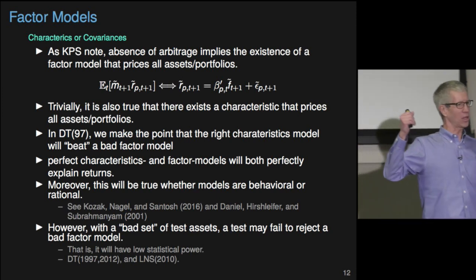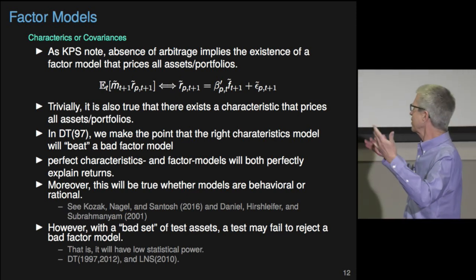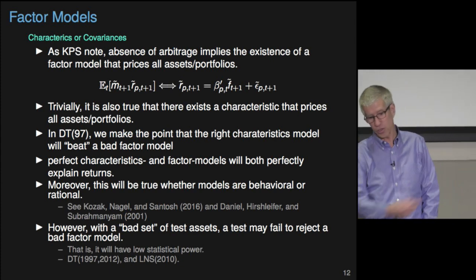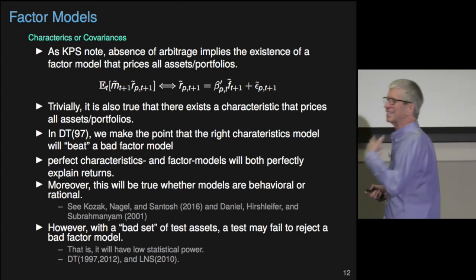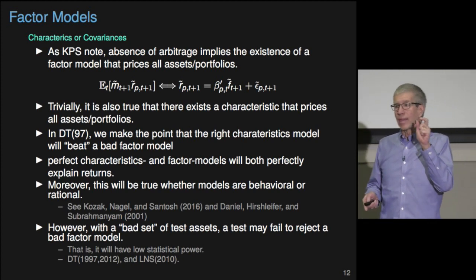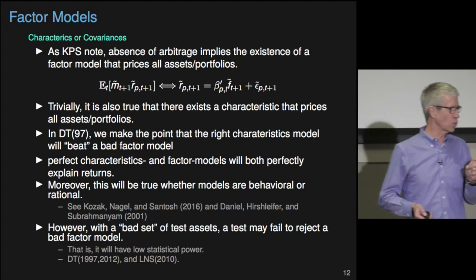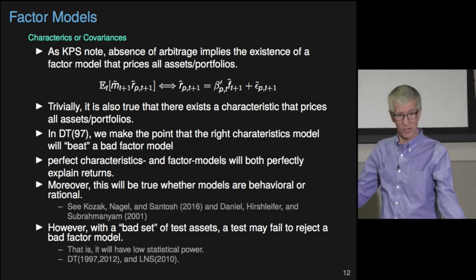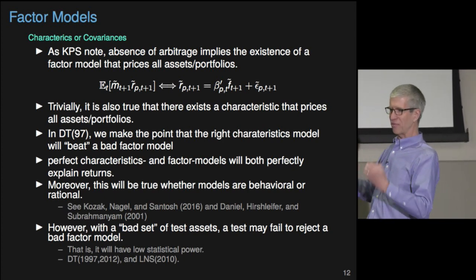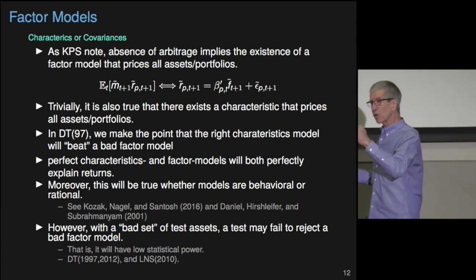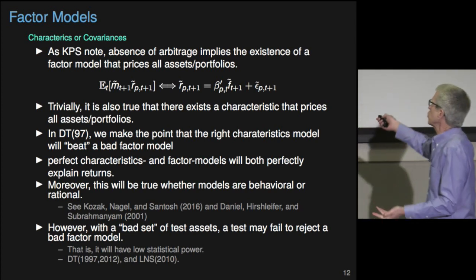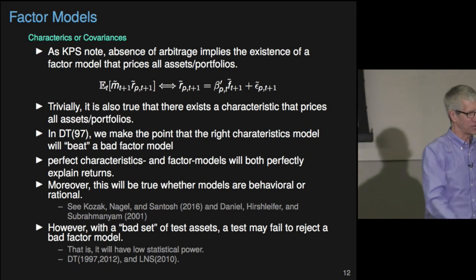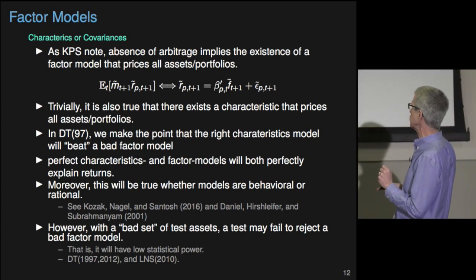When are you going to get a factor model and when are you going to get a characteristics model? What Sheridan and I argued in our 1997 paper — the way our work often gets interpreted is that we said a characteristics model will explain the world, not a factor model. We actually didn't say that. We argued that the right characteristics model will explain the world when a wrong factor model doesn't. However, one of the things we know is as long as there's no arbitrage, there does exist a factor model that works. But a characteristics model also exists — kind of trivially. There is always going to be some set of variables that, with enough knowledge, you could put together to give you a perfect proxy for expected returns.